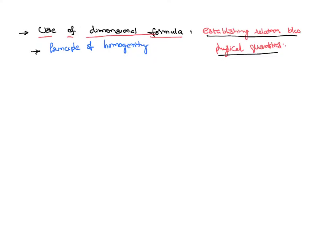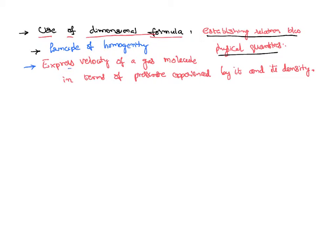Then how do you find a relation between physical quantities? I will explain by taking an example. This is the problem we would like to consider: we want to express the velocity of a gas molecule in terms of the pressure experienced by the gas medium and the density of the gas medium.